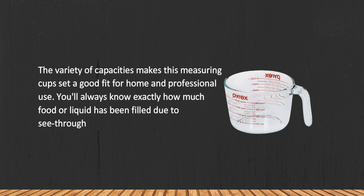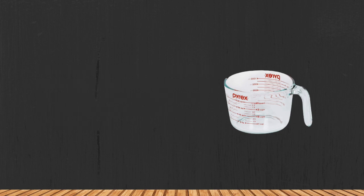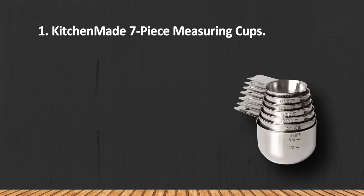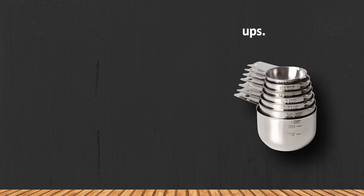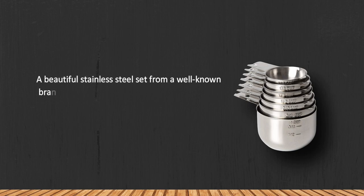The downside of glass material is that it's rather heavy. At number one: Kitchen Made seven-piece measuring cups. A beautiful stainless steel set from a well-known brand is a guarantee of longevity and durability.